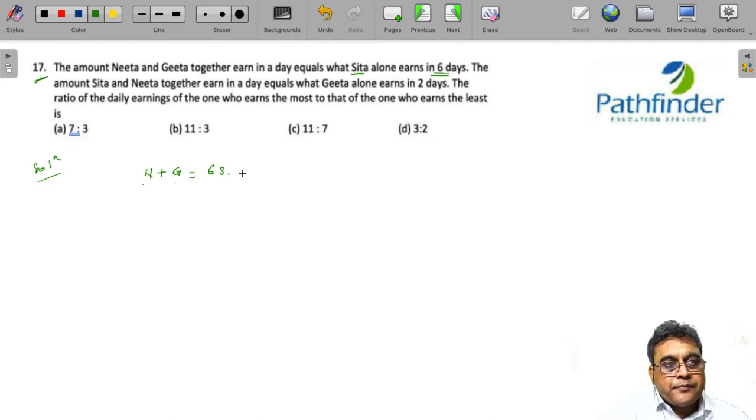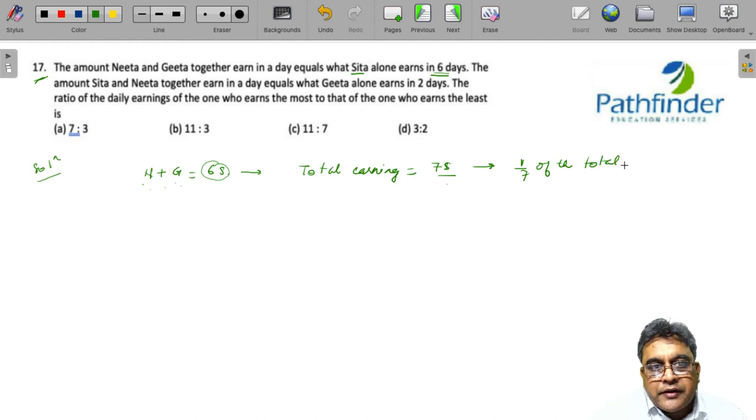G is Geeta's earning in one day and this equals what Sita alone earns in 6 days. Which means if Sita alone earns S in one day, Neeta and Geeta earn 6S in one day. The total earning of Neeta, Sita and Geeta in terms of Sita's earning must be 7 times Sita's earning, because 6S is the earning of Neeta and Geeta and 1S will be the earning of Sita, which means Sita essentially earns 1/7th of the total earnings of the three. This is the first point you need to know.